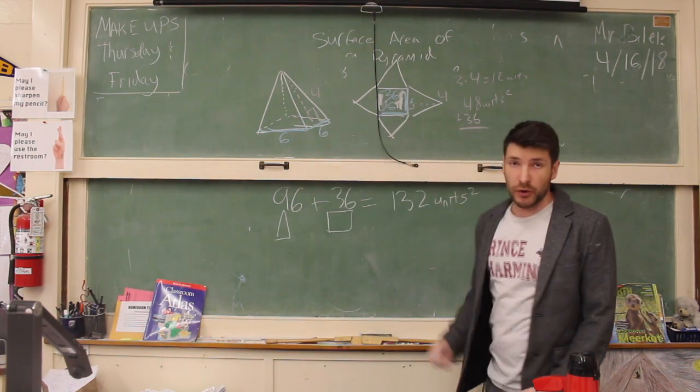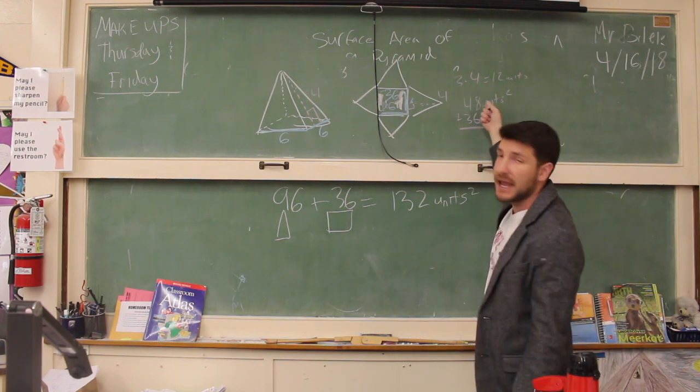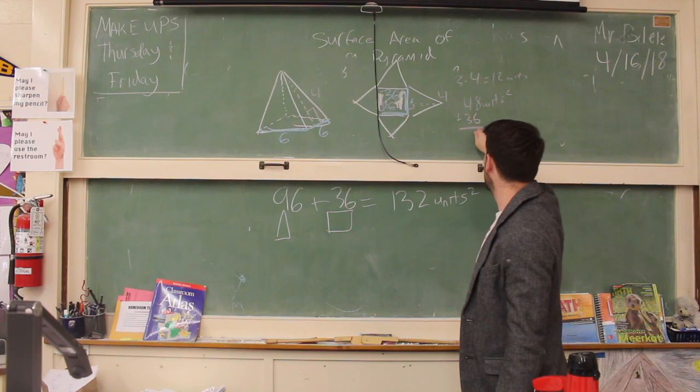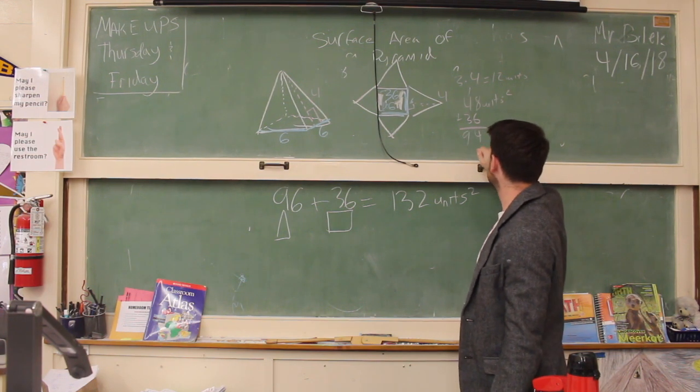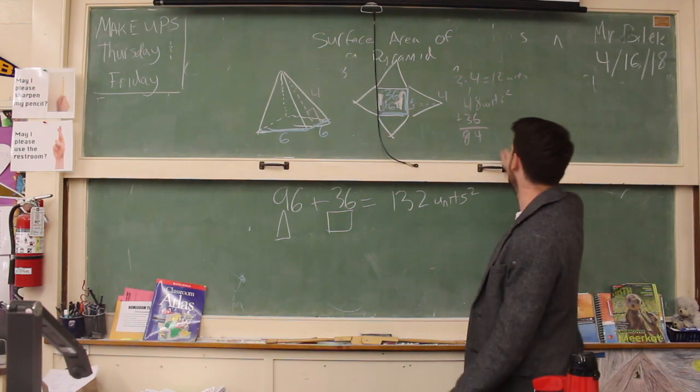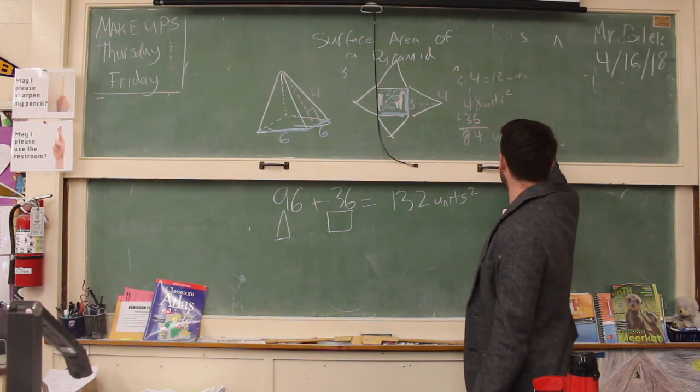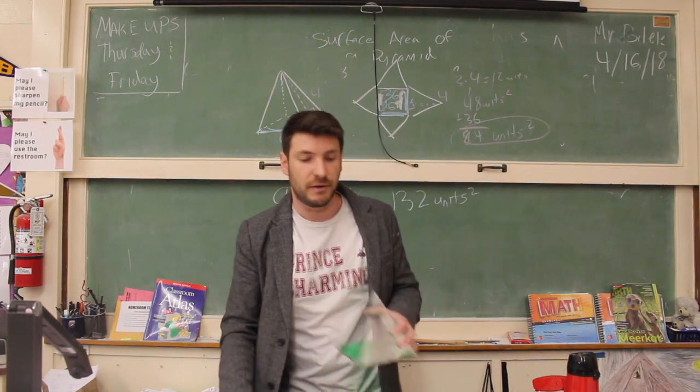And when we add those together, make sure you're doing your math correctly. Let's see here. 8 plus 6, got to carry that. So we want to make sure this is a 4. Carry that 1 right there. That's 94. Wait, hold on, that could be right. 84. There we go. 84 units squared is the surface area of our entire pyramid.